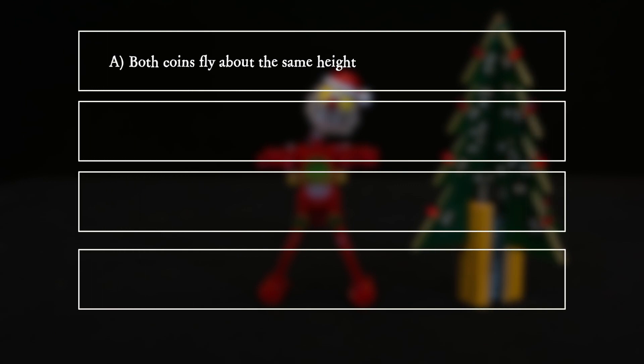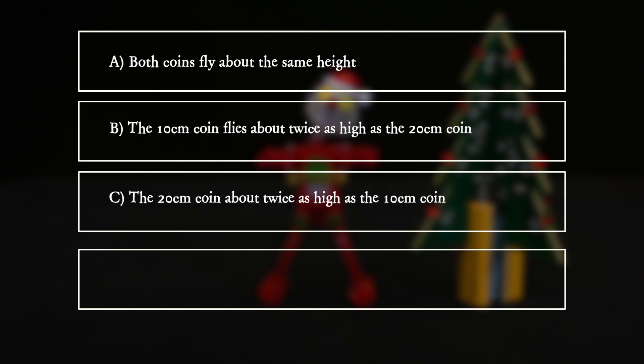A. Both coins fly about the same height. B. The 10cm coin flies about twice as high as the 20cm coin. C. The 20cm coin flies about twice as high as the 10cm coin.